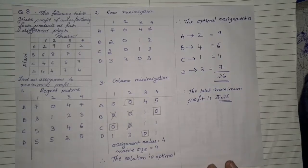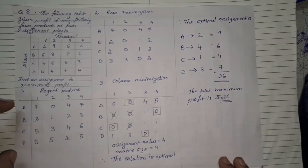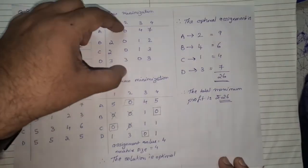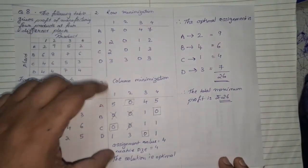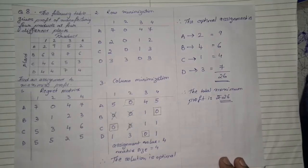So this is how we need to solve the sum which is based on maximization problem where we need to first create the regret matrix then row minimization column minimization check if the assigned values are matching with the matrix. If yes we get the optimal solution and then we need to get the optimum values.